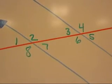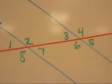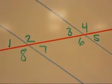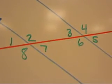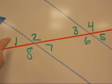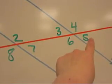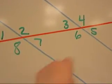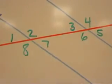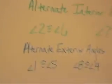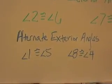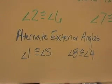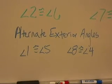Let's look at alternate exterior angles. Alternate again means one above the transversal and one below the transversal. Exterior means outside of the parallel lines. So angle 1 is alternate exterior with angle 5, and angle 8 is alternate exterior to angle 4. When we have parallel lines cut by a transversal, alternate exterior angles are also congruent: angle 1 is congruent to angle 5, and angle 8 is congruent to angle 4.